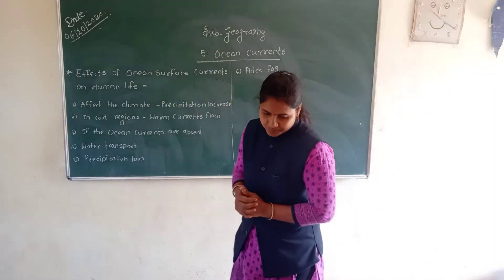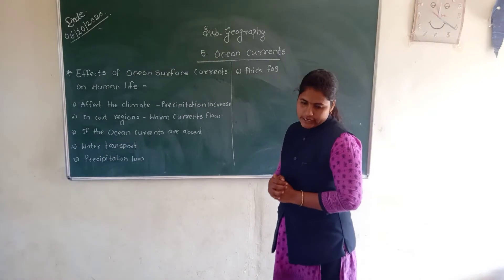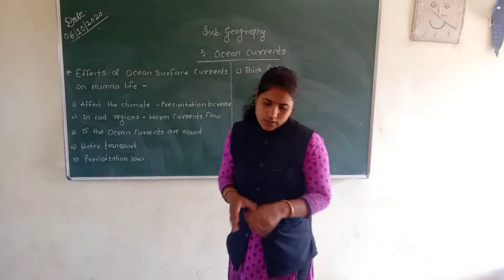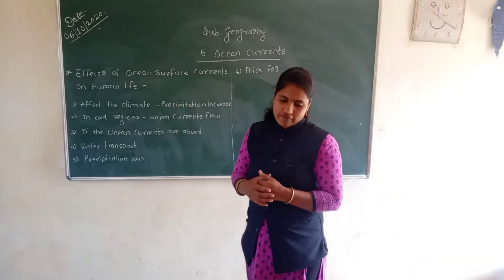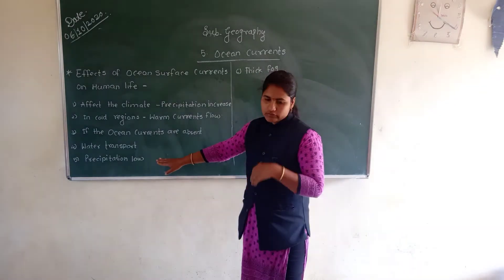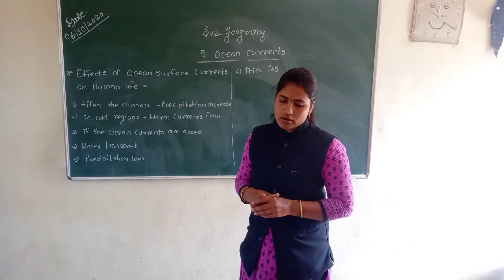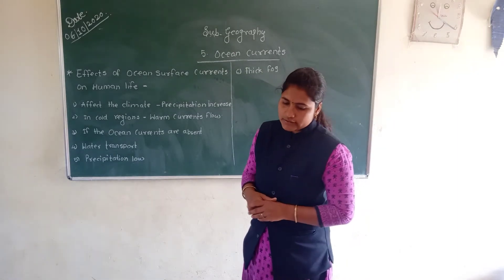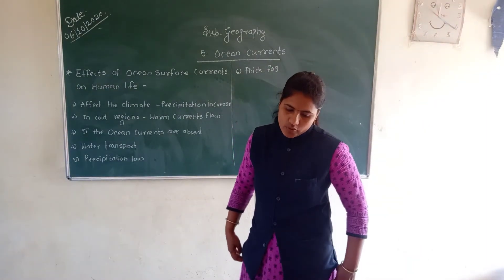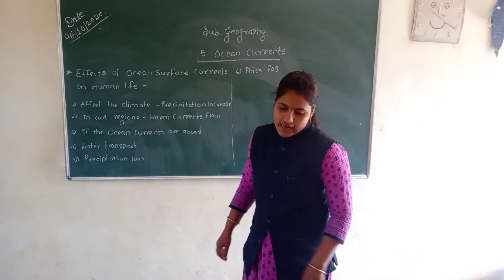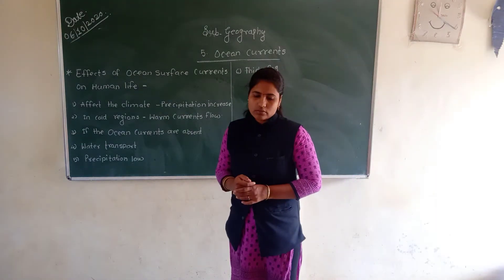Next point is that precipitation is low in certain regions. Where cold ocean currents flow in a specific region, precipitation can be found low. For example, Peru, Chile, as well as the arid deserts of South West Africa.